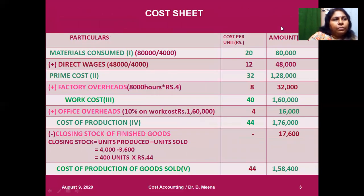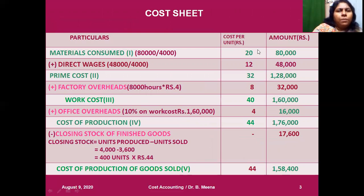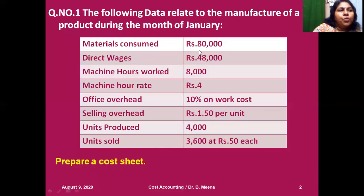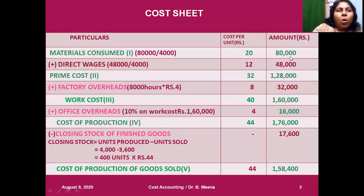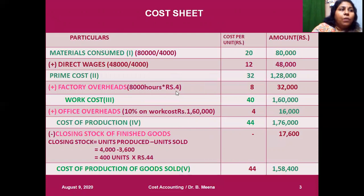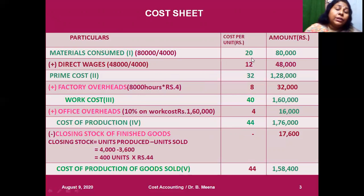For this kind of problem, you need to prepare a cost sheet with three columns: the first column is 'Particulars,' the second is 'Cost per Unit,' and the third is 'Amount.' The first item is materials consumed — the value is ₹80,000, which goes in the amount column. This ₹80,000 was spent for producing 4,000 units, so the cost per unit is 80,000 divided by 4,000.